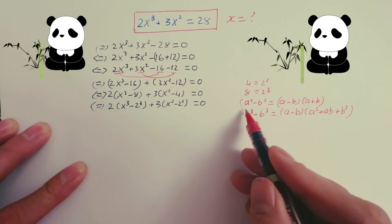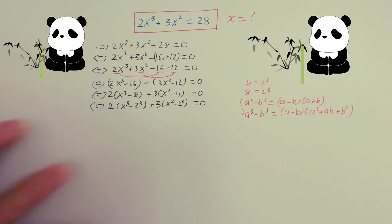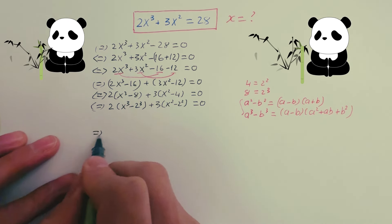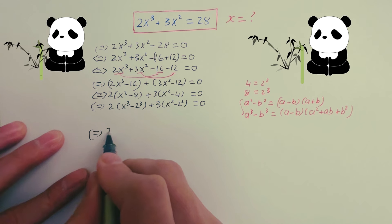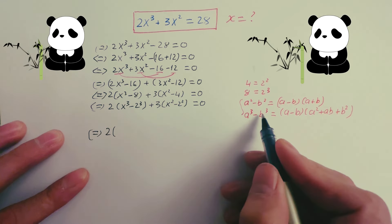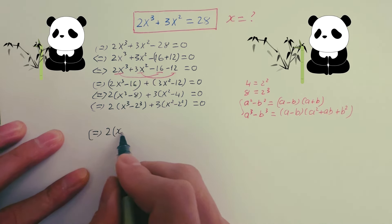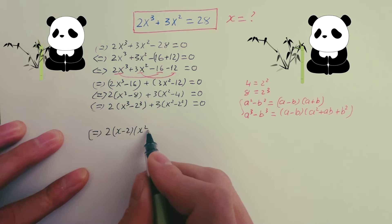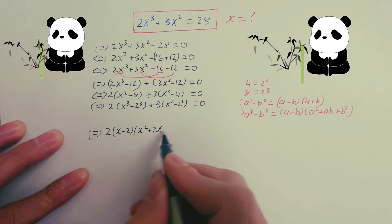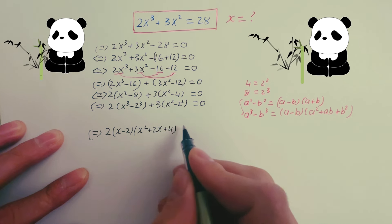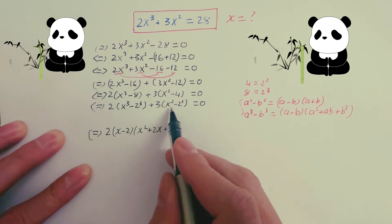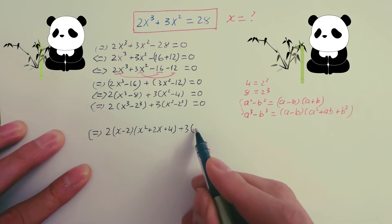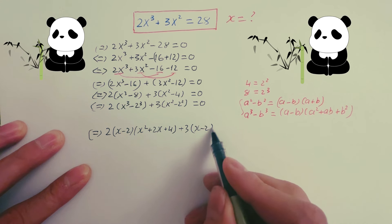If you use that formula, the equation will become: 2 times (x minus 2)(x squared plus 2x plus 4) plus 3 times (x minus 2)(x plus 2) equals zero.